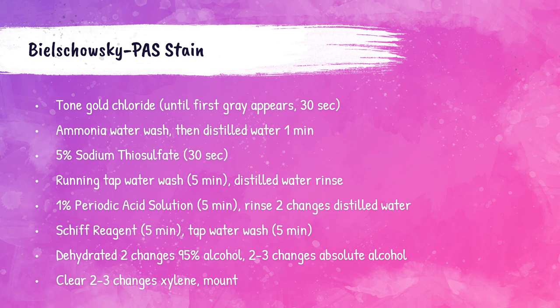Tone with gold chloride until first gray appears, approximately 30 seconds. Wash in ammonia water then distilled water for 1 minute. Place in 5% sodium thiosulfate for 30 seconds, followed by a 5-minute wash in running tap water, then rinse with distilled water. Place in 1% periodic acid solution for 5 minutes, then rinse in two changes of distilled water. Place in Schiff reagent for 5 minutes, then wash with tap water for 5 minutes. Dehydrate with two changes of 95% alcohol and 2–3 changes of absolute alcohol, clear with 2–3 changes of xylene, and mount with synthetic resin.